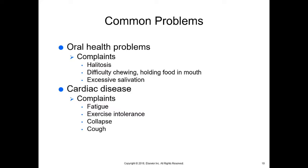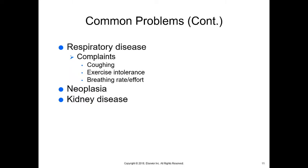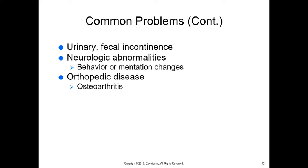Common oral health complaints include halitosis, difficulty chewing, holding food in the mouth, and excessive salivation, which usually indicates pain or nausea. Cardiac disease complaints include fatigue, exercise intolerance, collapse, or cough; in cats, vomiting may be a sign. Respiratory disease presents as coughing, exercise intolerance, and increased breathing rate and effort. Neoplasia is cancer. Kidney and urinary issues may include incontinence or frequent UTIs. Fecal incontinence and neurologic abnormalities may present as behavior or mentation changes. Orthopedic diseases include osteoarthritis.